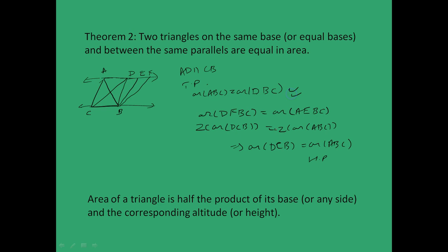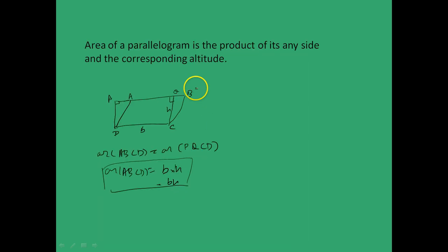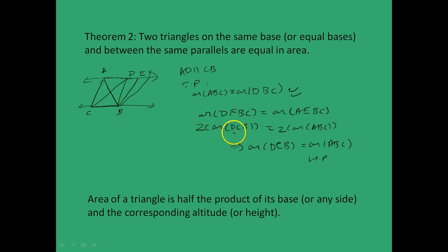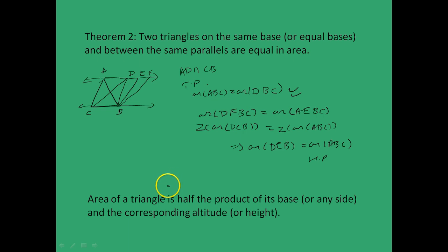We can also use the result that area of parallelogram ABCD equals B×H to prove that the area of a triangle is half the product of its base and the corresponding altitude or height. This follows from the fact that diagonals divide a parallelogram into two congruent triangles with equal area. We need to cover one more theorem and apply this in a question, which we will pick up in the next lecture. For now, this is all. Thank you.